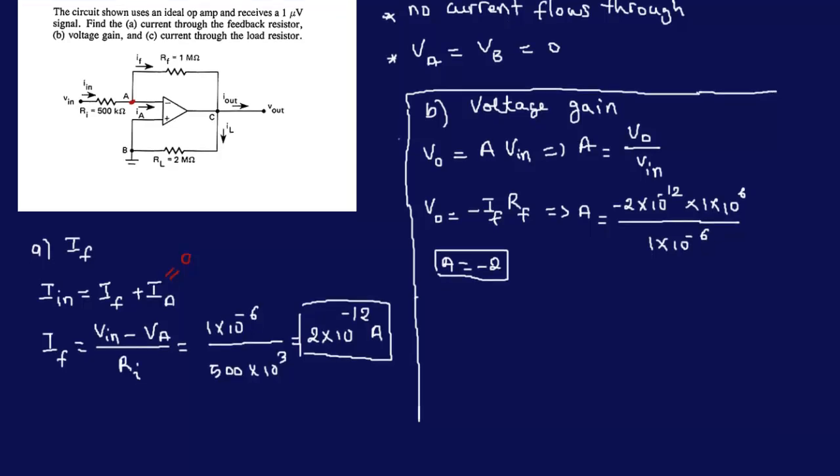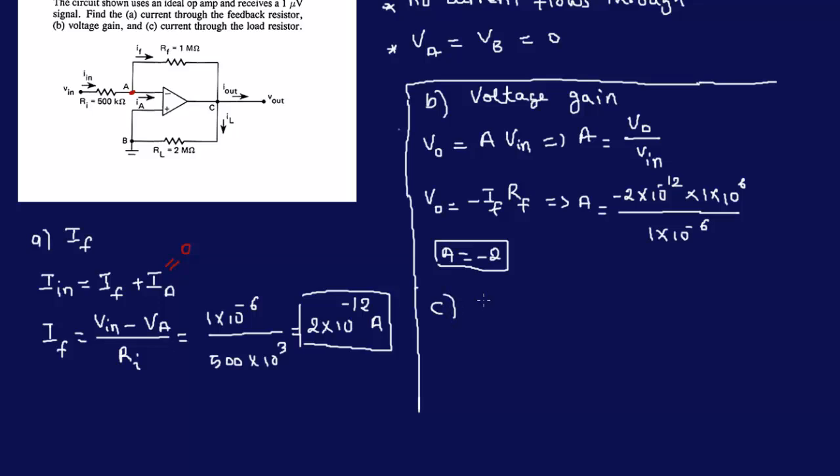Okay, now the last question is the current through the load resistor. So C basically IL. Okay, if you look at a problem here, we can use Ohm's law, right? Because IL would be, IL would be VC. The potential difference here is VC minus VB, but VB is equal to 0. So we can say that IL is VC over RL, but VC is also equal to Vout, right?